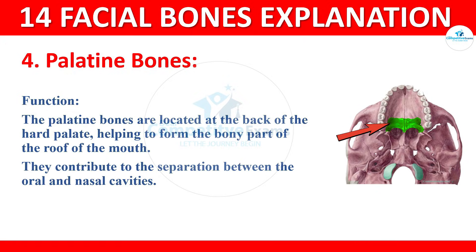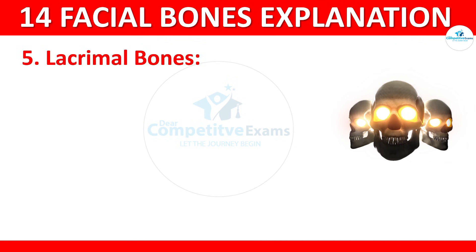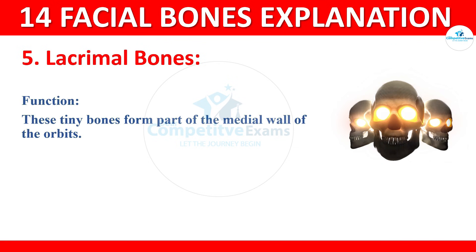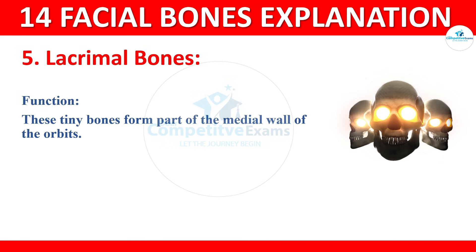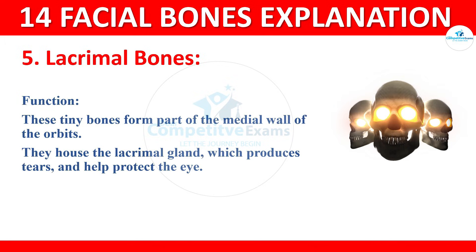The fifth bone is lacrimal bones. Lacrimal bones are tiny bones forming part of the medial wall of the orbits. They house the lacrimal gland, which produces tears, and help to protect the eyes.